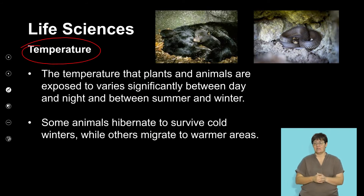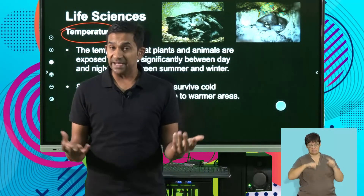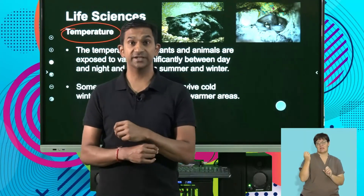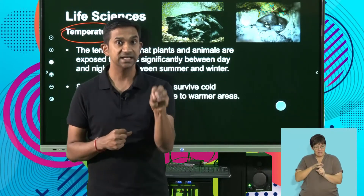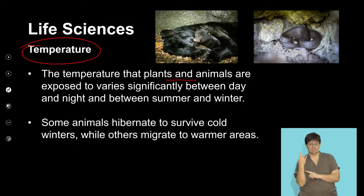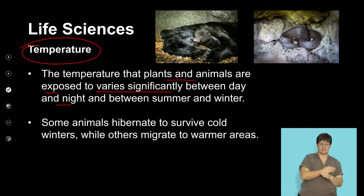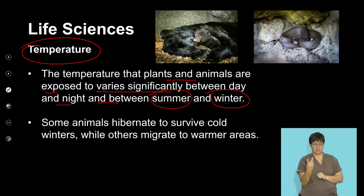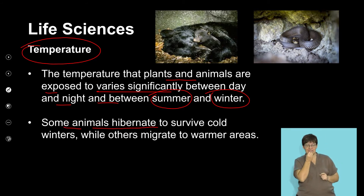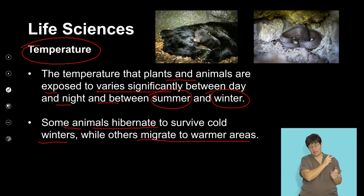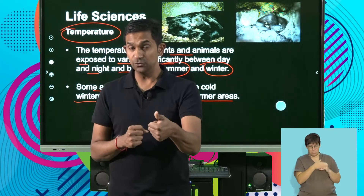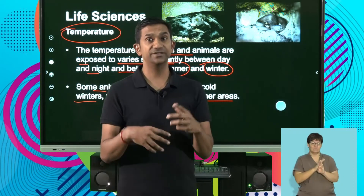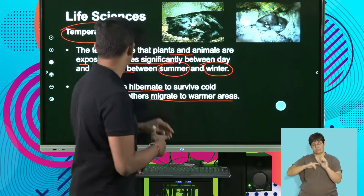The next climatic factor is temperature. Animals are affected by different temperatures, as are plants, and it affects the growth of seeds. The temperature that plants and animals are exposed to varies significantly between night and day and even between seasons. In certain areas such as deserts, they experience hot days and cold nights. There are also seasonal changes from summer to winter where temperatures fluctuate significantly. Some animals and herbivores that consume large amounts of plant material survive in winters while others migrate to warmer areas — either to find food more available during winter or to avoid harsh environmental temperatures.